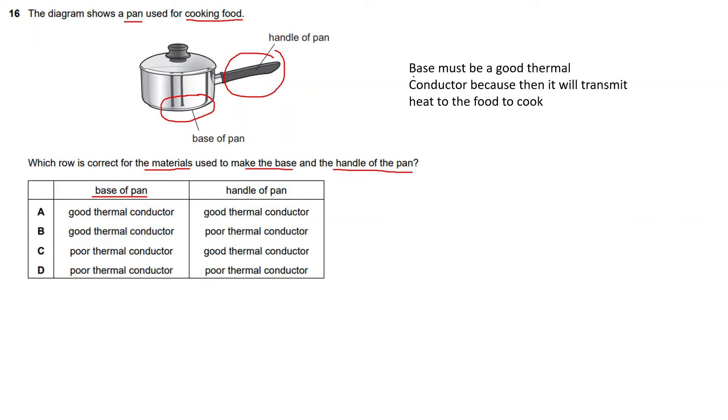The base must be a good thermal conductor because it will transmit heat to the food to cook. The metal base must be a good thermal conductor so it will transmit heat energy to the food inside. Otherwise, it will not be cooked because of no transmission of heat energy. That's why the base must be a good thermal conductor, so the answer is A or B.